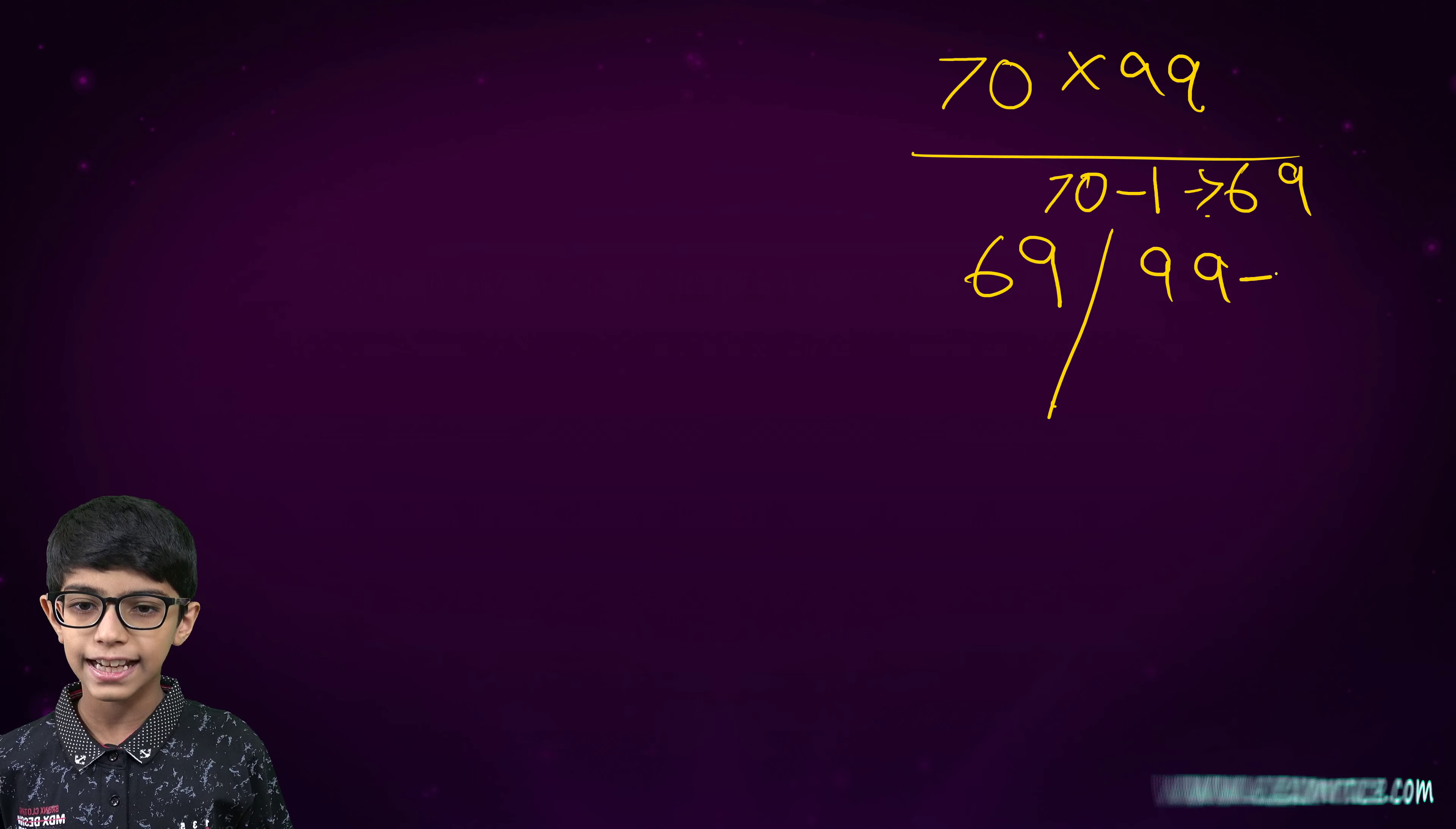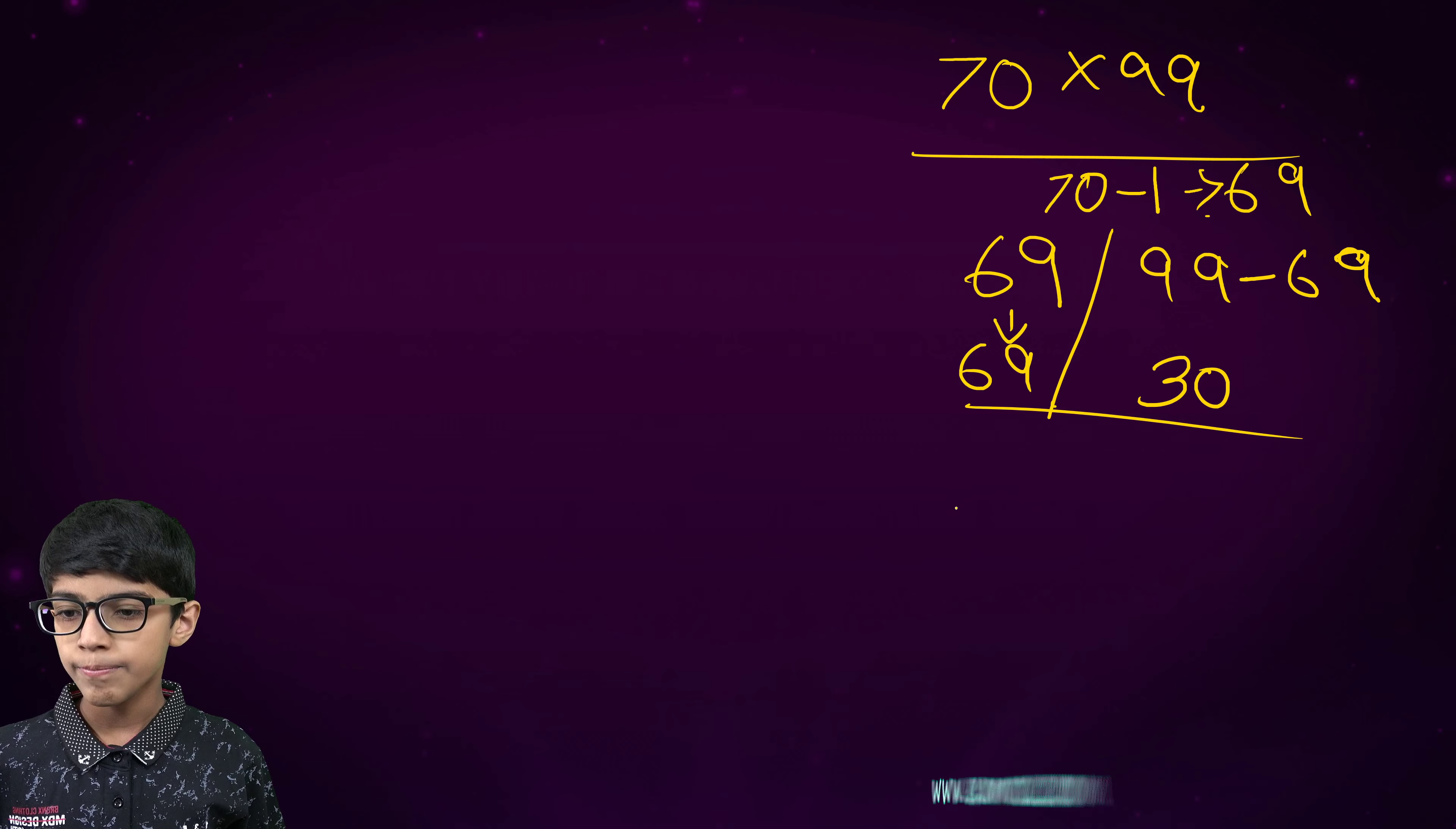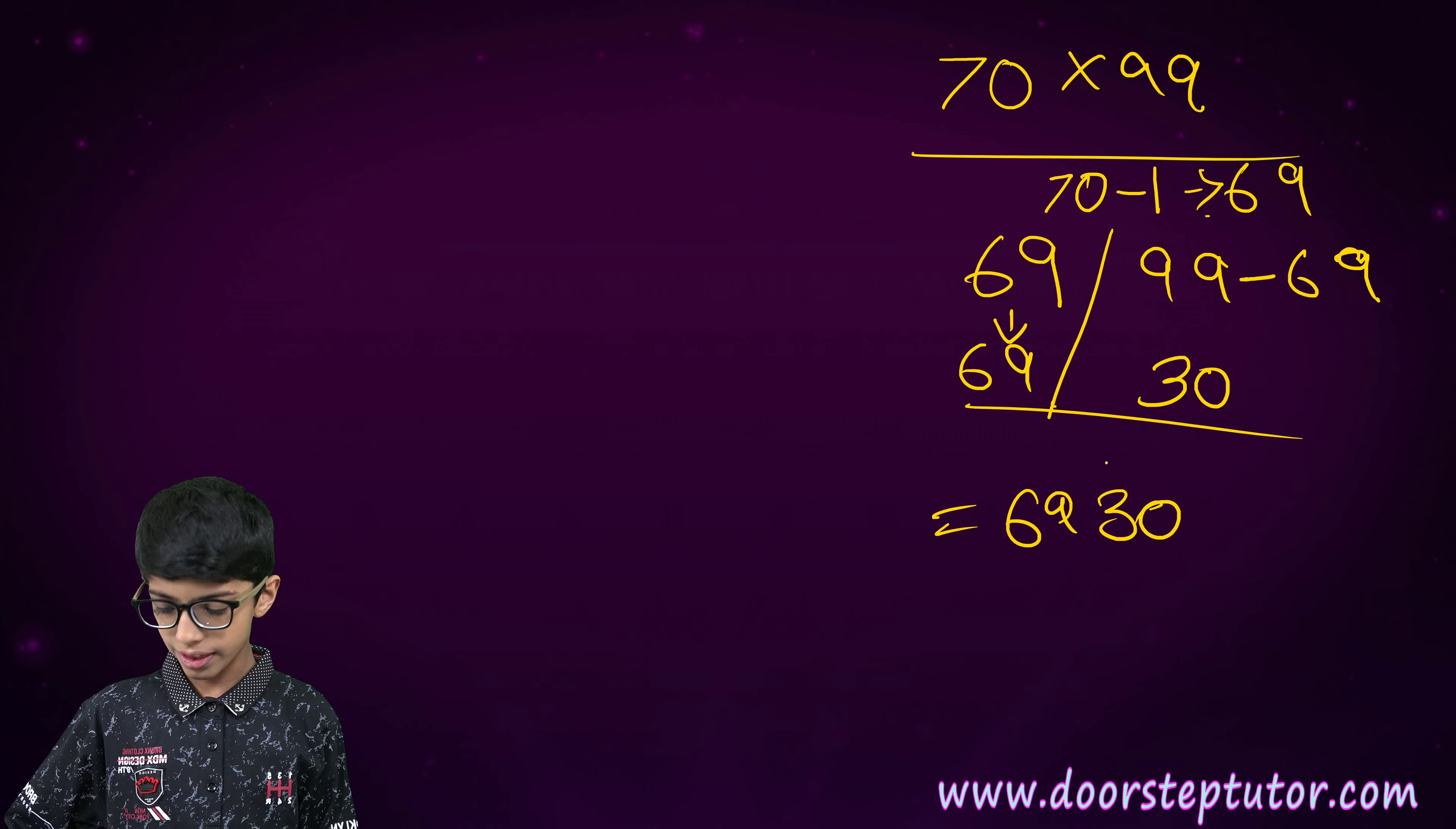And here, 99 minus 69. Which is 30. And we will write 69 down as it is. Therefore, our final answer would be 6930.